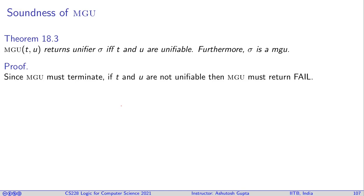Now the other aspect is that when it returns, it returns a unifier sigma if and only if this is unifiable. Furthermore, sigma is an MGU.